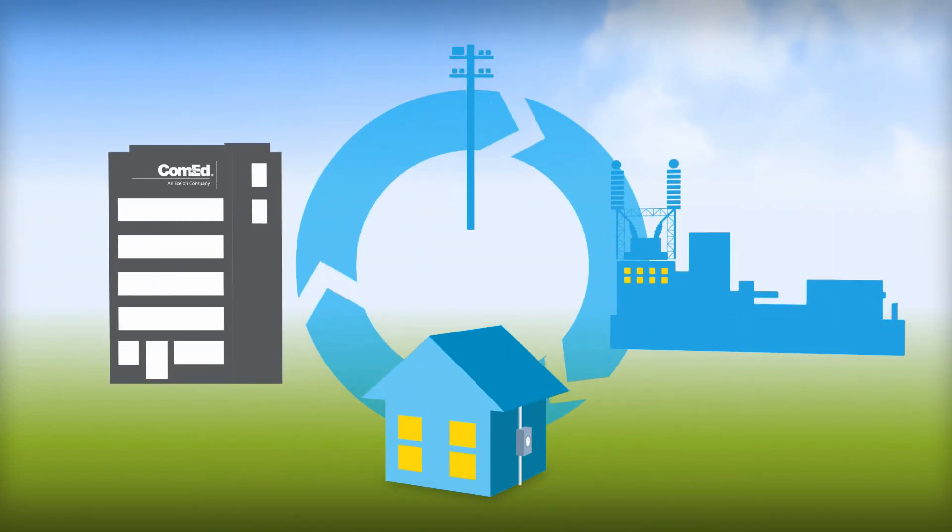Basically, the smart grid includes three new components that identify and respond to problems on the electric system, automatically communicate back to ComEd, and provide you better service.